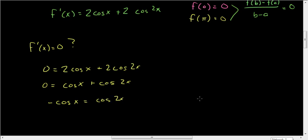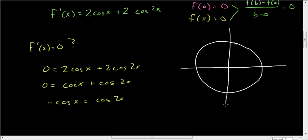So we want to know when negative cosine of x equals cosine 2x. We have to find angles where, when we double the angle, we switch signs. To do this, I'm going to use the unit circle. My cosines are negative over here and positive over here.